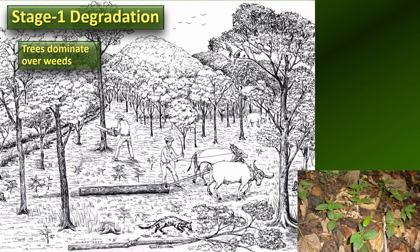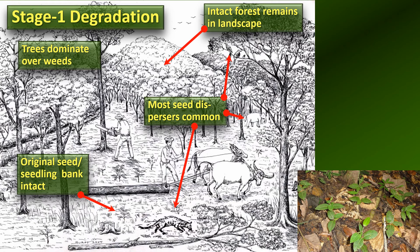What we've done at FORU is to try to define five stages of degradation, and each of these stages is separated by a tipping point. Stage one is the least degraded condition and stage five is the most degraded condition. When you reach the tipping point from one stage down to the next, a considerable increase in effort in terms of forest restoration is required.